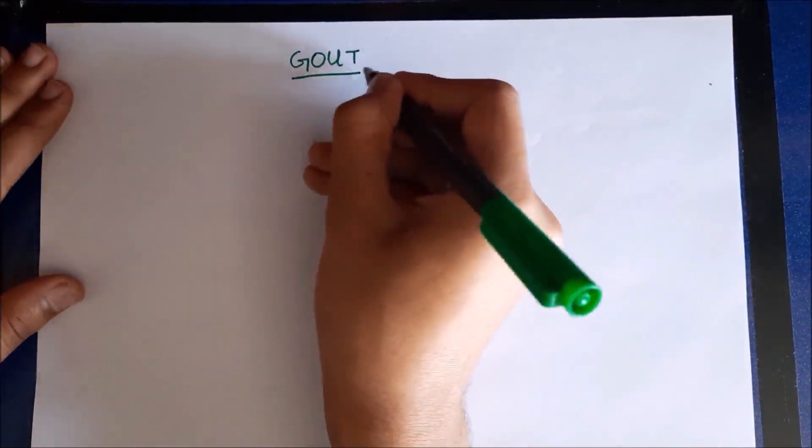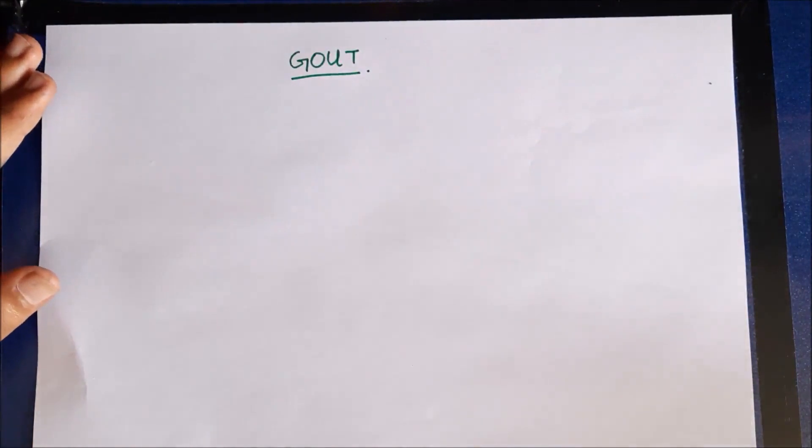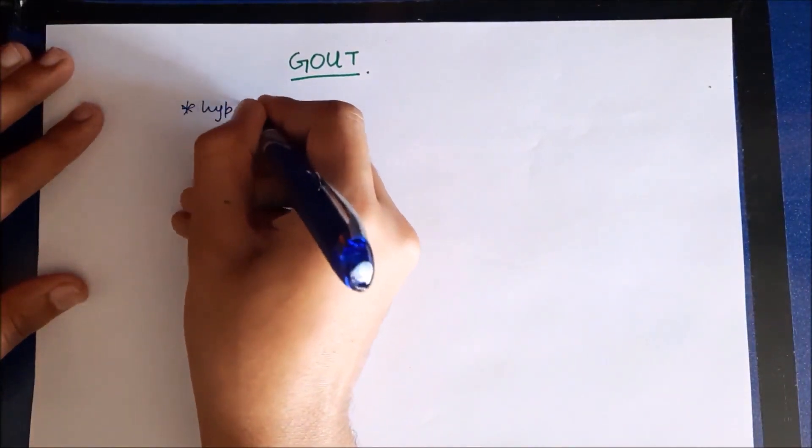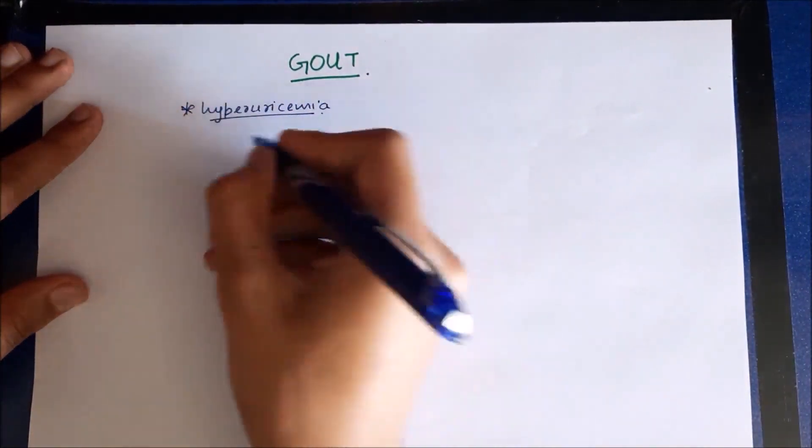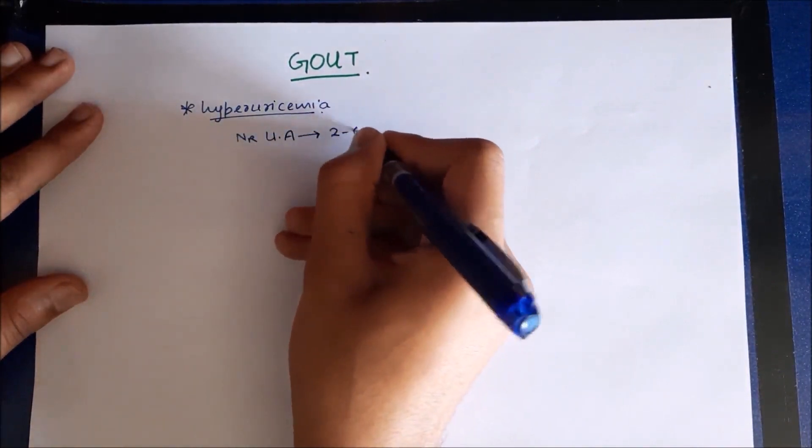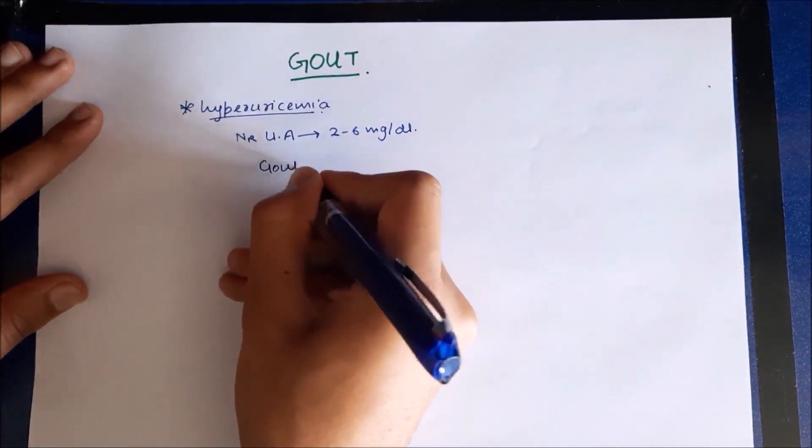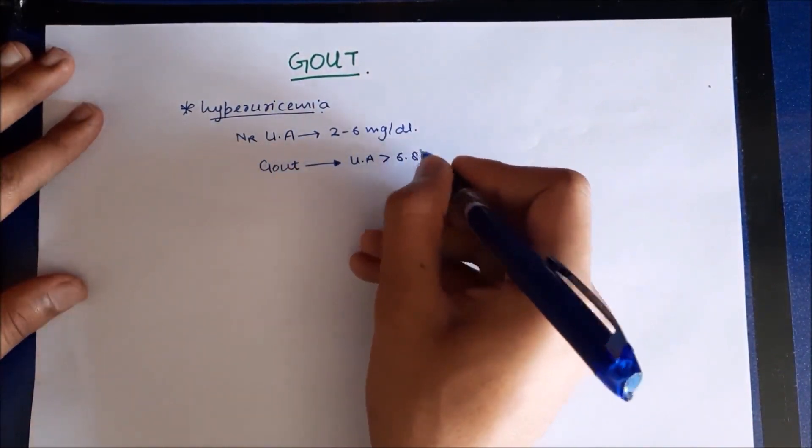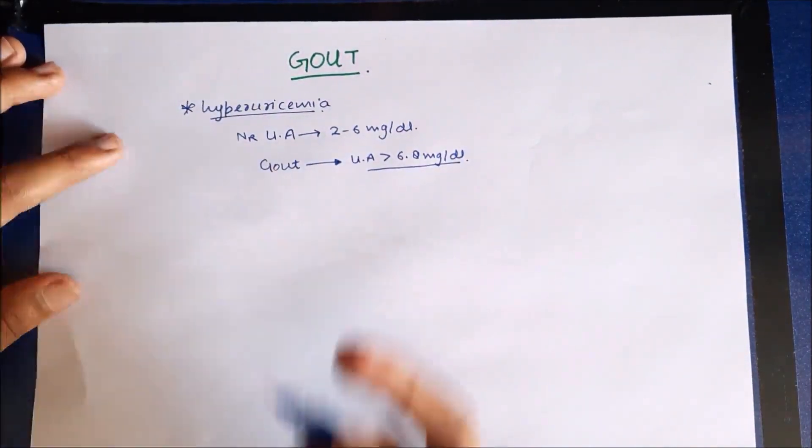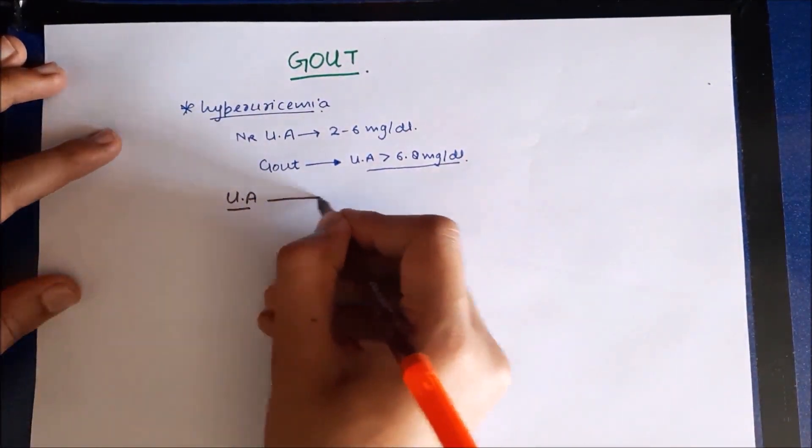In this section we'll have a discussion of gout. Gout is characterized by hyperuricemia, which is increased levels of uric acid in the blood. Normal levels of uric acid in blood are 2 to 6 mg per dl. However, if the uric acid levels exceed more than 6.8 mg per dl, that results in hyperuricemia and predisposes to gout.